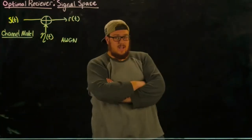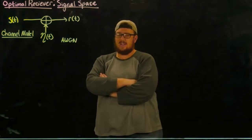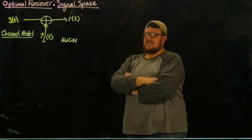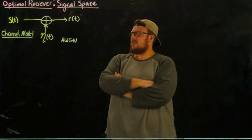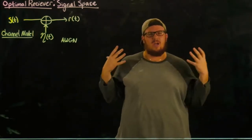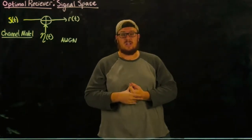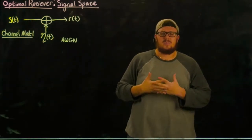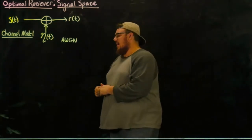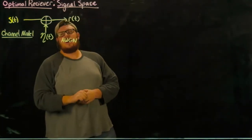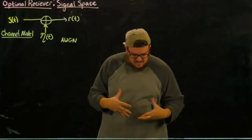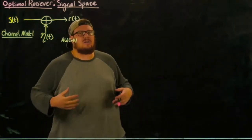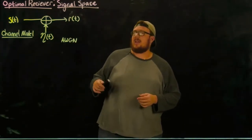Hey guys, this is Andrew with HKN and today we're going to be talking about finally getting into the optimal receiver for digital communication networks. This is going to be split up into two or three videos, but the first part covers the narrative we want to follow in developing this receiver. The part we're going to talk about right now is signal space — basically how we're going to put all of our signals into some kind of representation. Just like last time, we talked about vectors and orthonormal bases.